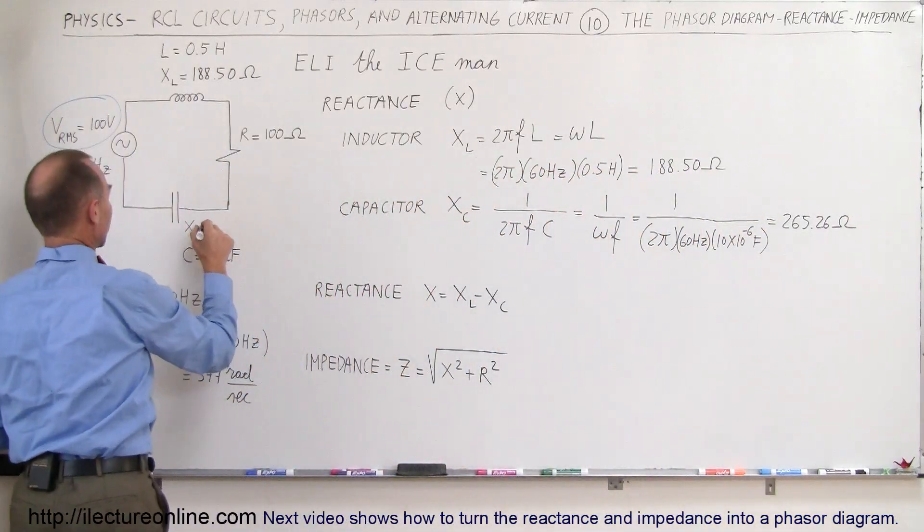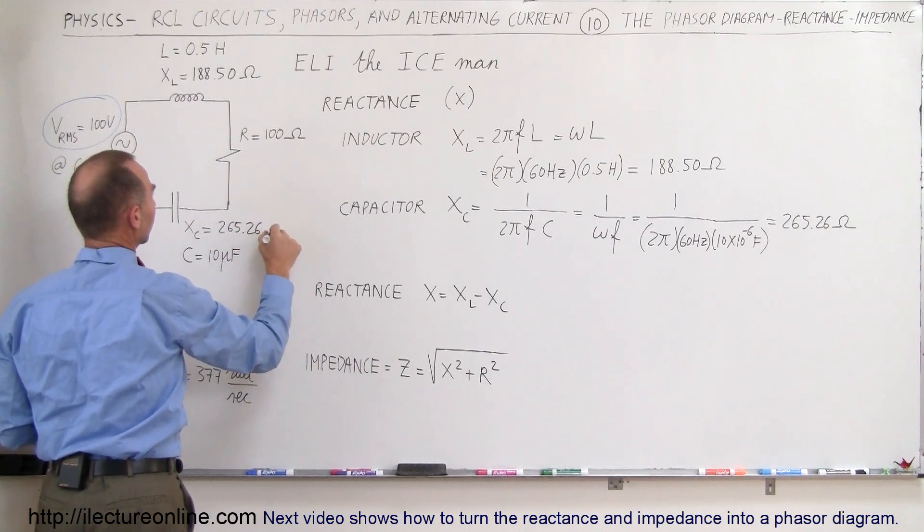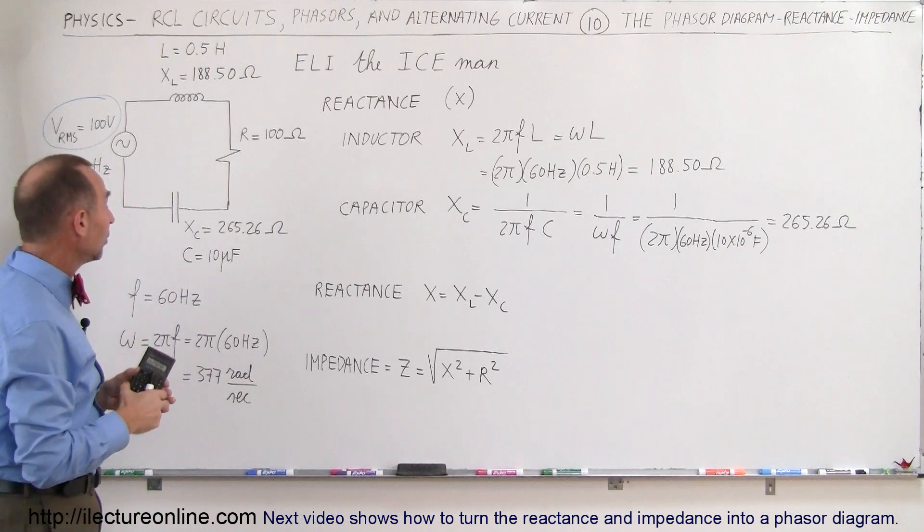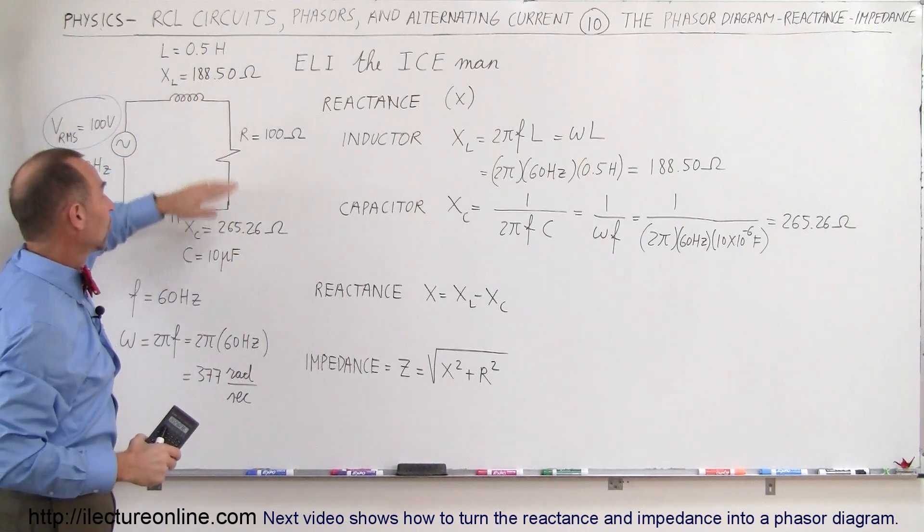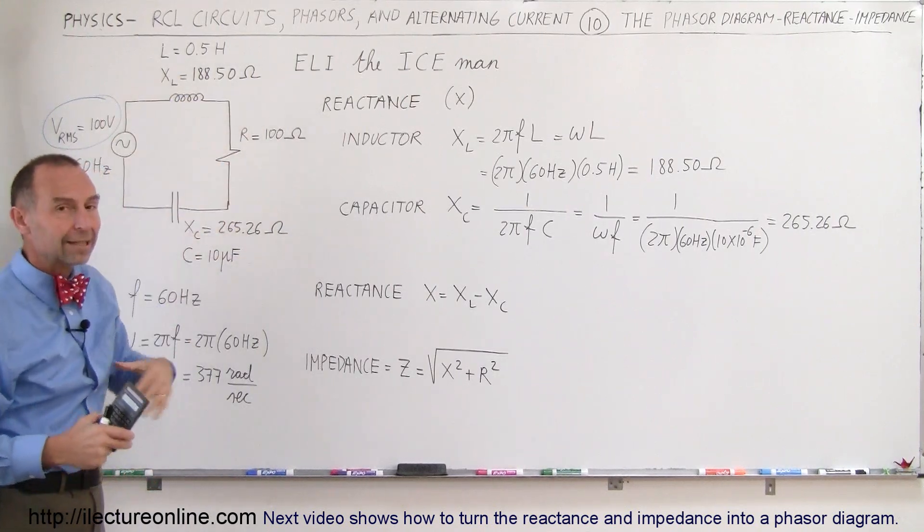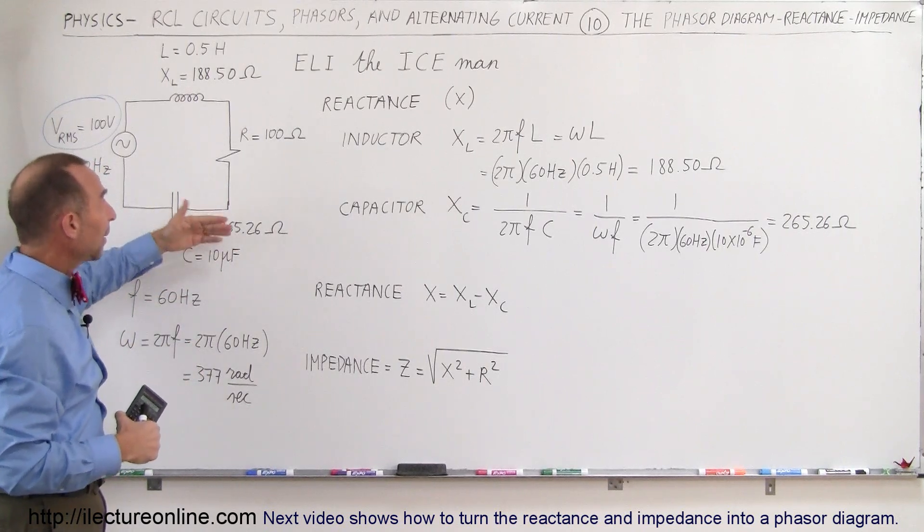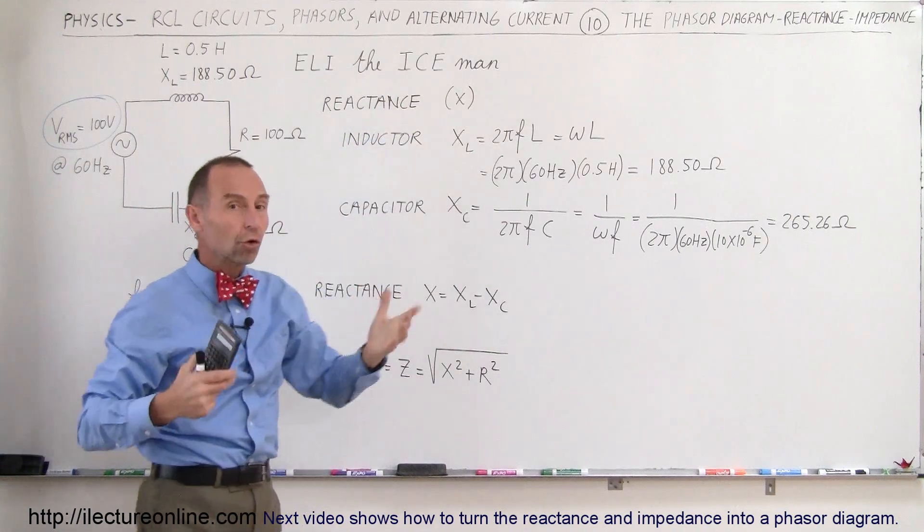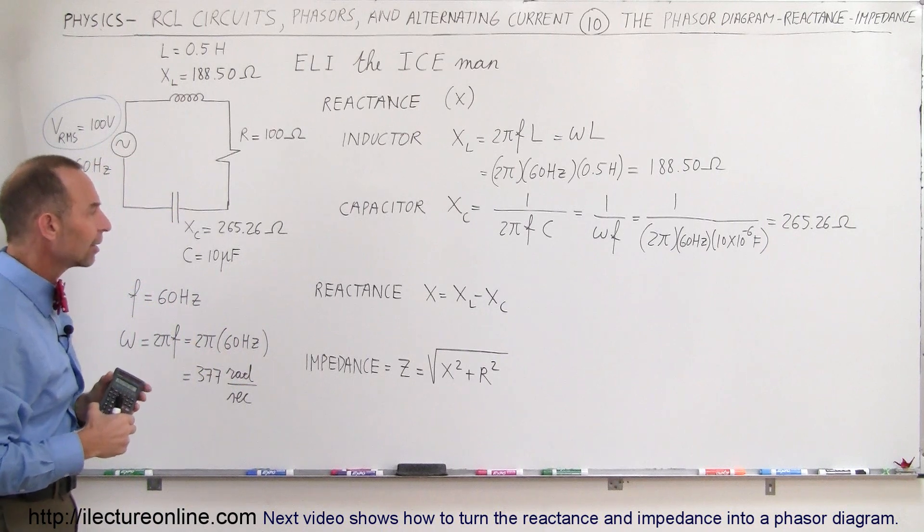We put that in here. The capacitor reactance is 265.26 ohms. Notice that in this particular circuit, the capacitor reactance is bigger than the inductive reactance. So the capacitor will overpower the inductor, and the whole circuit will act more like a capacitor circuit instead of an inductor circuit. Since in a capacitor circuit the current leads the voltage, in this whole circuit the current will be ahead of the voltage by some phase angle, and we'll show you later how to find that phase angle.